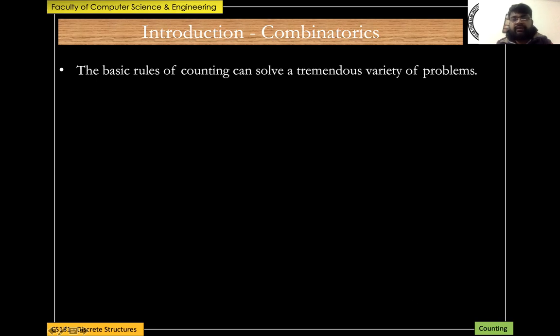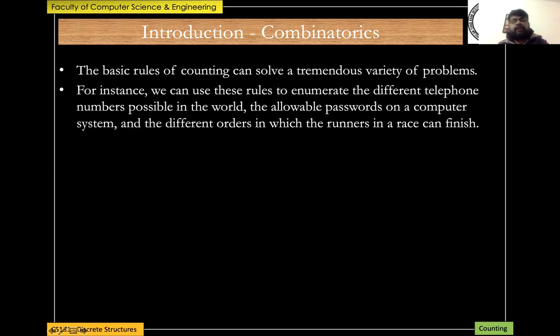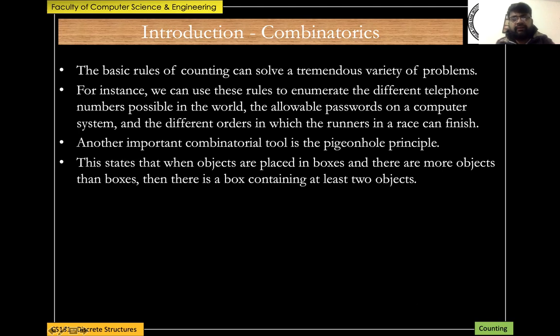Let us begin with the topic of combinatorics. The basic rules of counting can solve a tremendous variety of problems. For instance, we can use these rules to enumerate the different telephone numbers possible in the world, the allowable passwords on a computer system, and the different orders in which the runners in a race can finish. An important combinatorial tool is the pigeonhole principle.